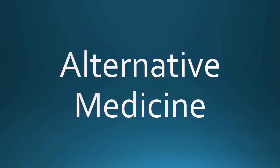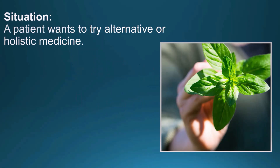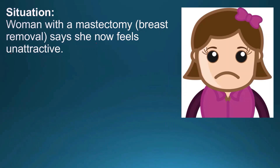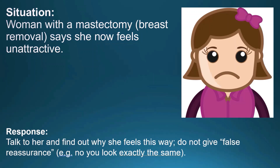Alternative medicine. A patient wants to try alternative or holistic medicine. In a supportive, non-judgmental way, discuss the underlying reasons with the patient and advise on known benefits and risks of treatment, including adverse effects and medication interactions. Additionally, a woman who underwent a mastectomy says she now feels unattractive. Talk to her and find out why she feels that way, but do not give false reassurance — don't tell her she looks exactly the same, because she doesn't.